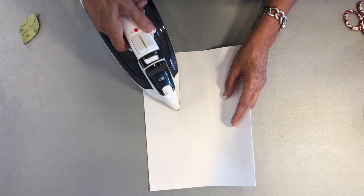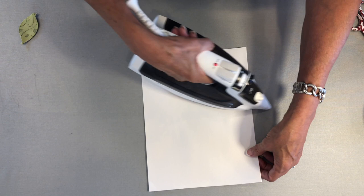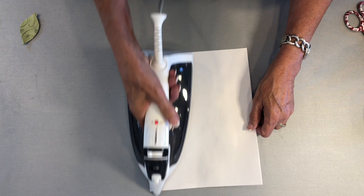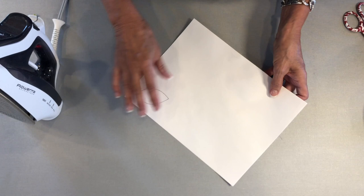I have my iron with no steam so that I don't wrinkle my paper, and then just fuse these together. I've placed them on the ironing surface both with the shiny side facing down, and I press them together.